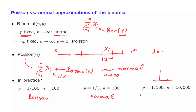So this is an example where both approximations will be valid. To conclude, we have two different approximations that are valid in different regimes. In practice, you need to do some thinking before deciding which approximation to choose.